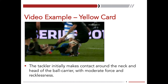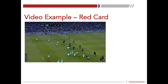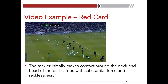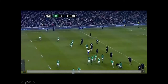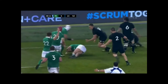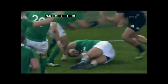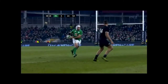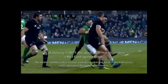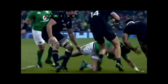The logic behind a yellow card versus a red card: a yellow card applies when the tackler initially makes first contact around the head or neck with moderate force and recklessness. For a red card, the tackler also initially makes first contact around the head and neck — above the line of the shoulders — but with substantial force and recklessness. Substantial force is the key word distinguishing the red card scenario, with substantial force and recklessness used in the follow-through of the tackle.